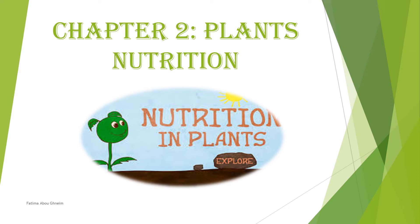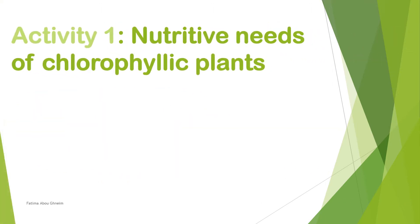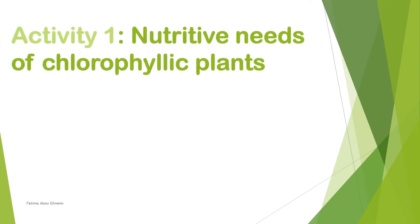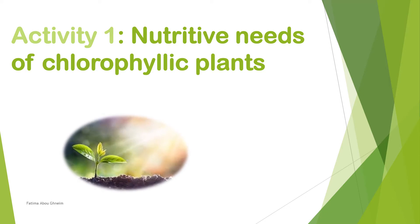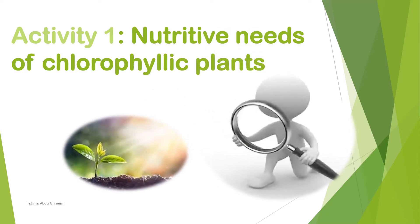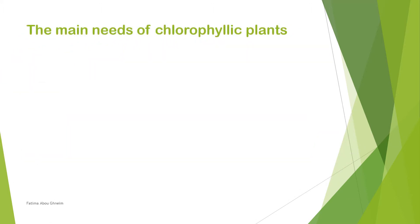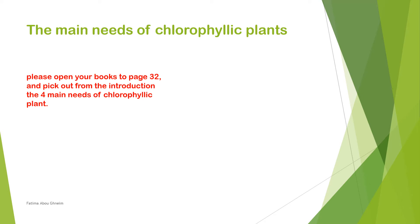We're going to start with chapter 2. Let's start with activity 1: the nutritive needs of chlorophyllic plants. When we say chlorophyllic plants, we mean green plants. The main needs of chlorophyllic plants — please open your books to page 32 and pick out from the introduction the 4 main needs of chlorophyllic plants.